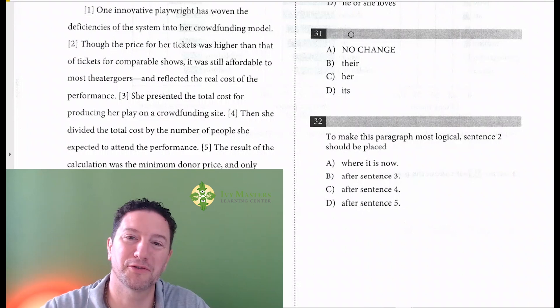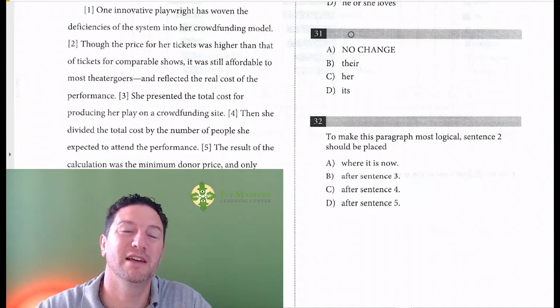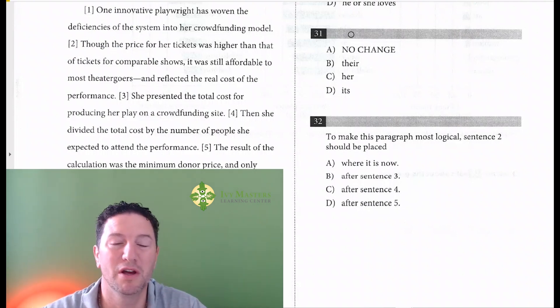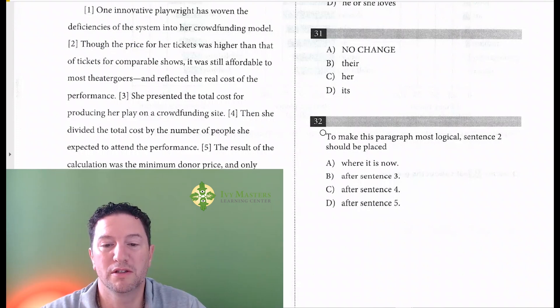Hi, I'm Paul Pasolka from Ivy Masters Learning Center and ivymasters.com. Today we're going to look at Test 5, Section 2, number 32, which reads: to make this paragraph most logical, sentence 2 should be placed.